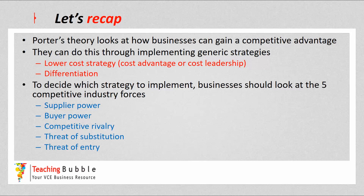To decide which strategy to implement, businesses should look at the five competitive industry forces: supplier power, buyer power, competitive rivalry, threat of substitution, and threat of entry. By analyzing those five forces and looking at their own strengths, businesses can make a decision about which strategy to implement — whether the lower cost strategy or the differentiation strategy. But if a business tries to implement both, they risk being stuck in the middle and being mediocre at both, so it's better to choose one particular strategy.